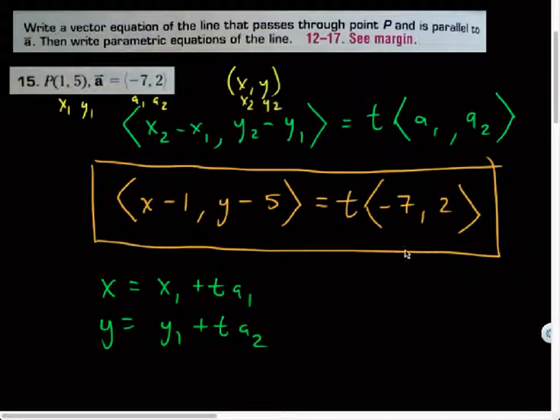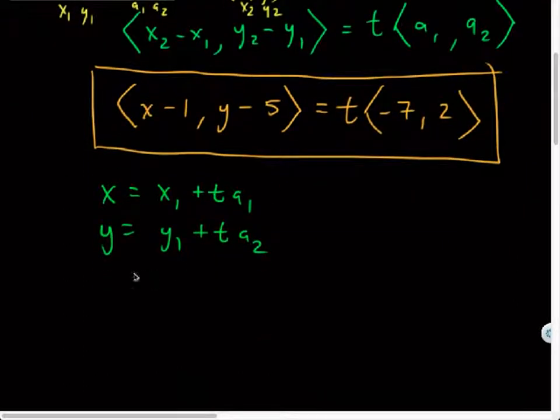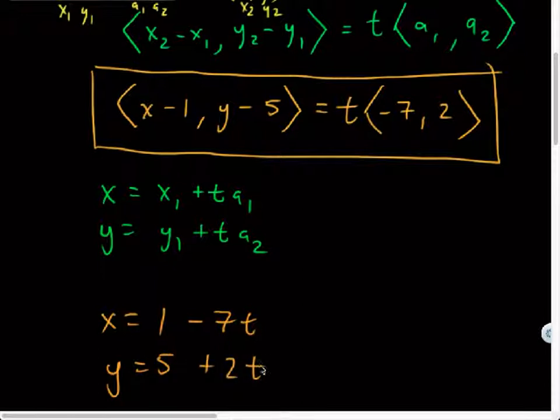X is equal to X1 plus T times A1, and Y is equal to Y1 plus T times A2. So here's kind of the general parametric equations of a line that pass through a point and are parallel to a vector. So once again, I'm just going to plug in what I've got. So I'll have X equals 1 plus T times negative 7, so I guess I could write that as minus 7T. And I'll have Y equals 5 plus 2T.